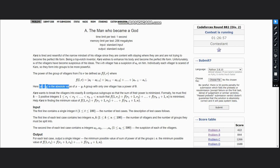A group with only one villager has the power of 0, as x and y would be equal in that case.